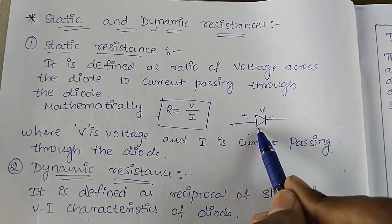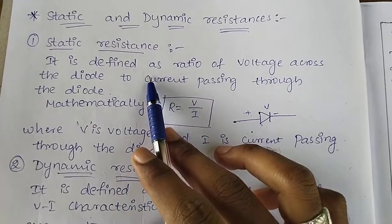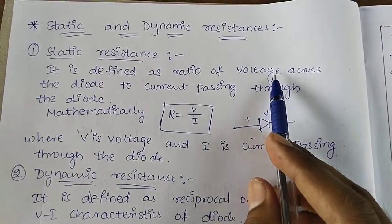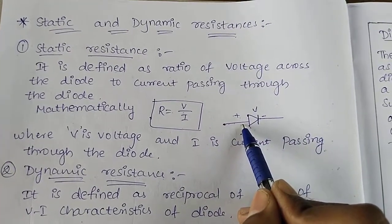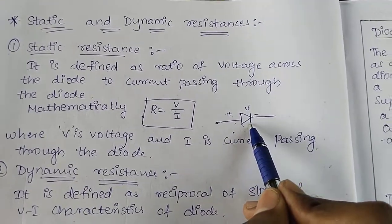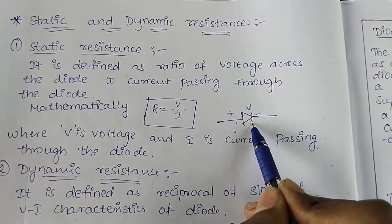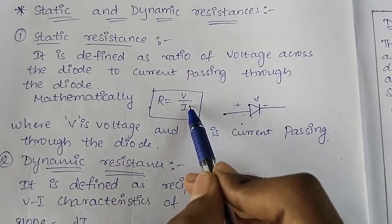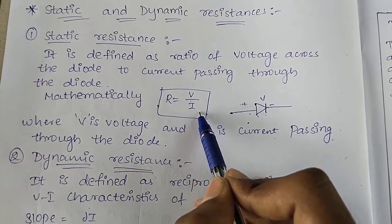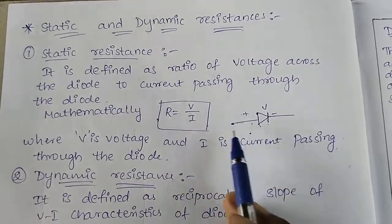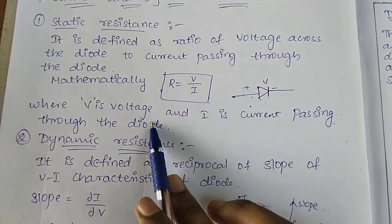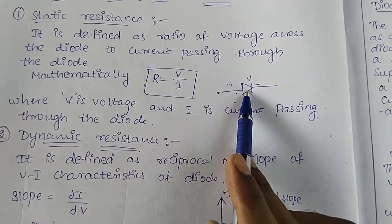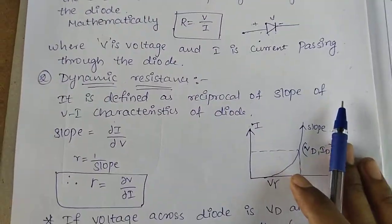If we find the ratio of voltage and current in a diode, that is the static resistance. Mathematically it is represented as V by I, where V means voltage and I means current passing through the diode.